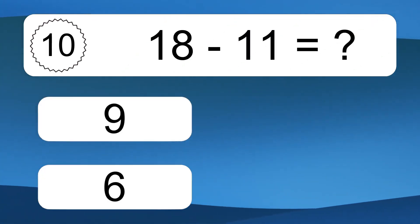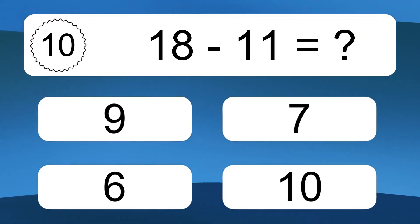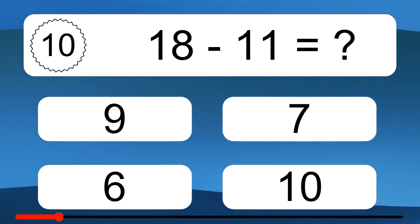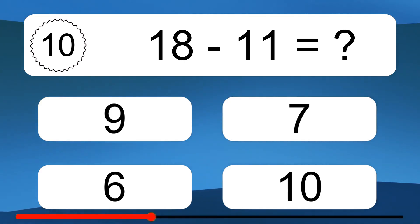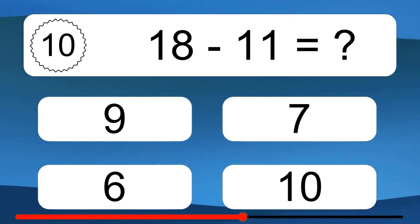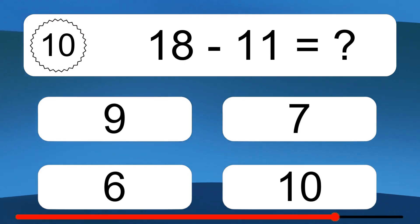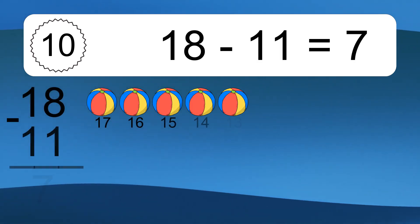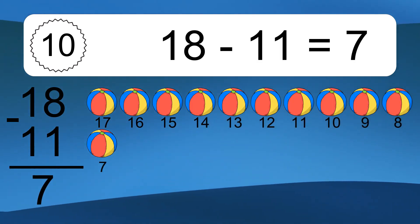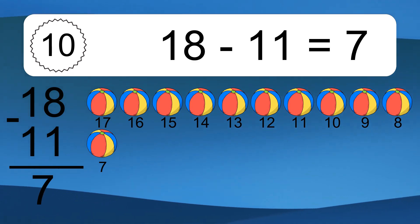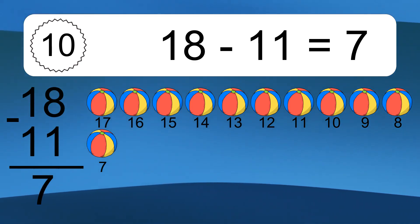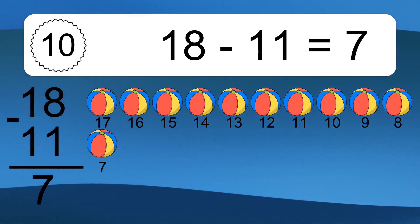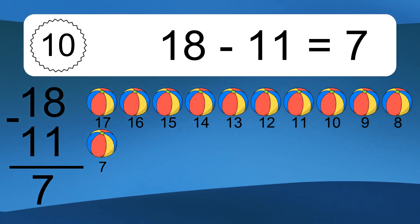18 minus 11 equals what? 18 minus 11 equals 7. Let's count it: 17, 16, 15, 14, 13, 12, 11, 10, 9, 8, 7.